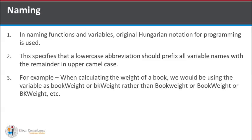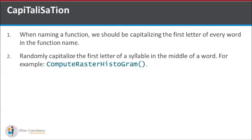In naming functions and variables, the original Hungarian notation for programming is used. This specifies that a lowercase abbreviation should prefix all variable names, with the remainder in upper camel case. When naming a function, we should capitalize the first letter of every word in the function name. This is also called camel case writing.